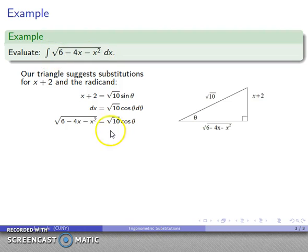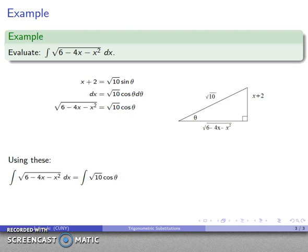So now I have the integrand, √10 cos θ, the differential, √10 cos θ again. And so my new integral becomes 10 cos²θ. And at that point, I could use my trigonometric identity that allows me to expand cos²θ, 1/2 + 1/2 cos 2θ. And I could do a little bit of algebra, a little bit of calculus, do the integration.